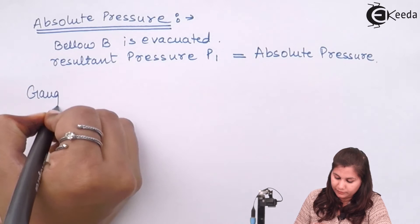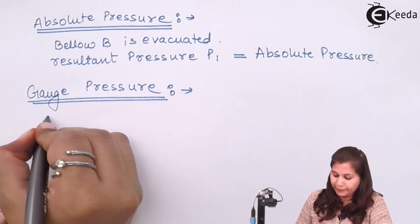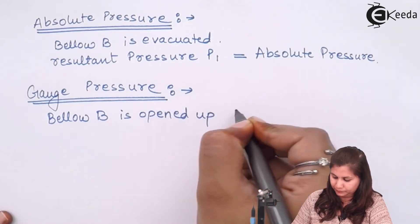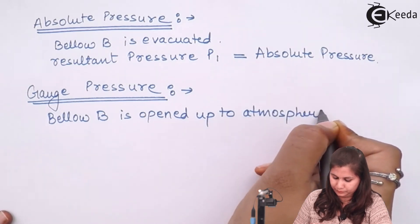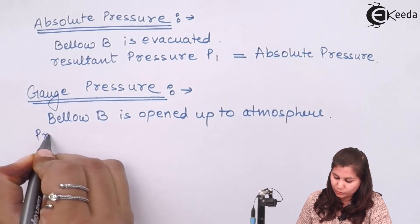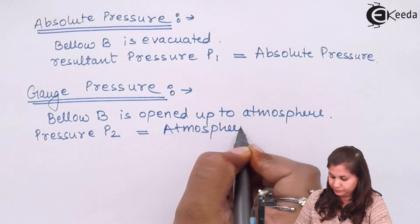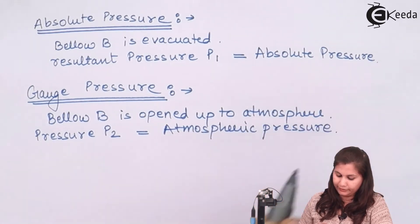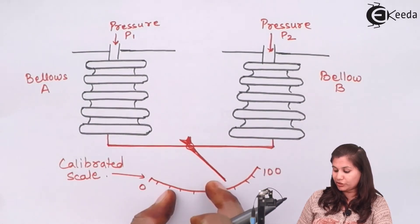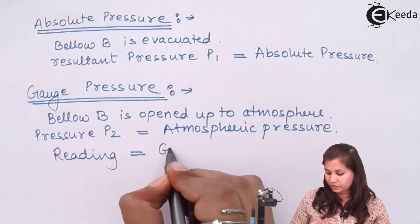For measurement of gauge pressure, bellow B is open to the air — so bellow B is opened up to the atmosphere, meaning pressure P2 is equal to atmospheric pressure. Therefore the reading which we are getting on the scale is P1 minus atmospheric pressure, which is the gauge pressure. So the reading of the scale is equal to the gauge pressure.